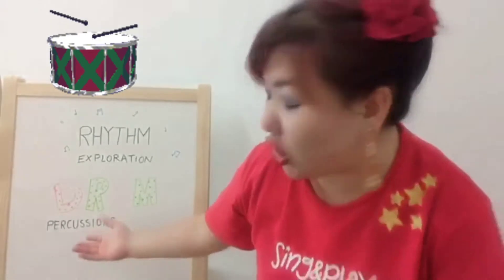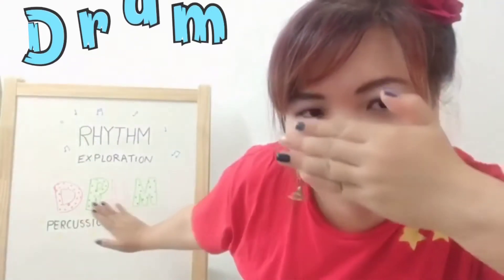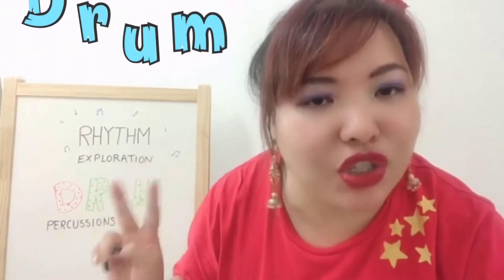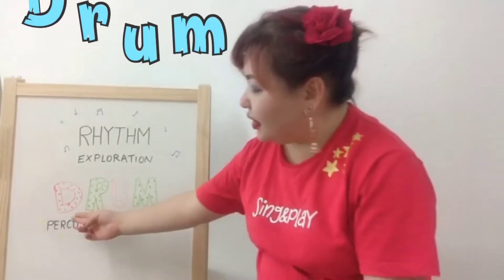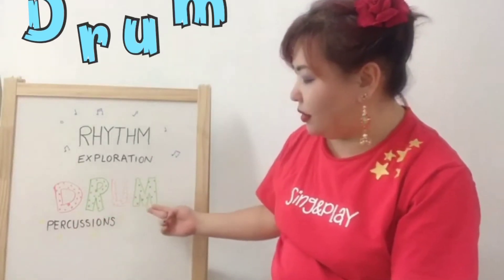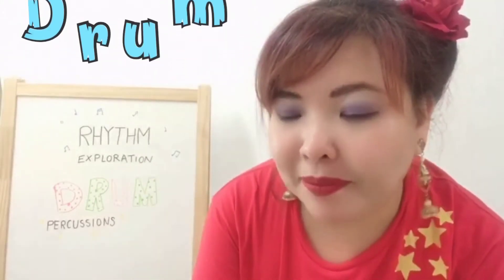A drum is actually called a percussion. Who can spell drum? Close your eyes, don't look at that word. It's D-R-U-M, drum. Let's try again: D-R-U-M, drum. Very good! So if you can spell drum, I think you can definitely make some rhythm!